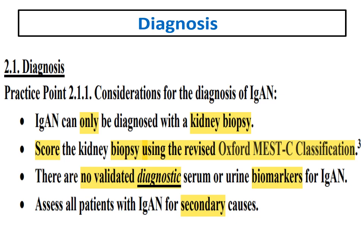According to KDIGO 2020, IgA nephropathy can only be diagnosed by a kidney biopsy, and the biopsy should be scored using the revised Oxford MEST-C classification. An important note from the KDIGO guidelines: there are no validated diagnostic serum or urinary biomarkers to diagnose IgA nephropathy. We do not rely on serum or urinary biomarkers — kidney biopsy is the only diagnostic tool.